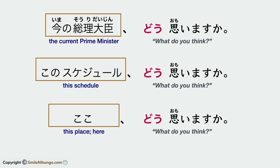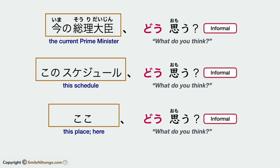ここ means 'this place' or 'here' in Japanese. If you are looking for a new apartment with your roommate or partner, you would ask the same question in informal speech. To convert these questions to the informal version, you only need to change the main verb おもいます to the plain form: おもう. So the informal versions are: 今の総理大臣、どう思う? このスケジュール、どう思う? ここ、どう思う?